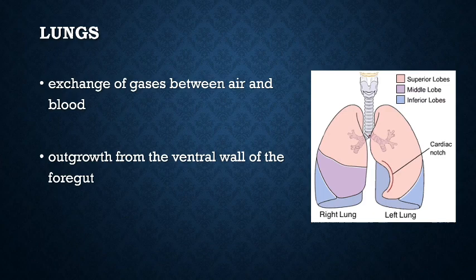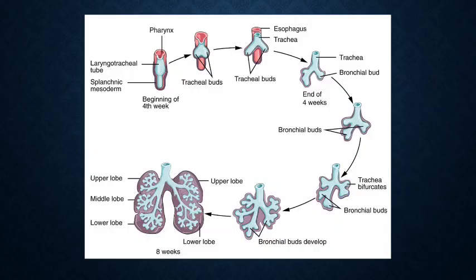The main function of the lung is for air conduction and gas exchange. Developmentally, it is an outgrowth from the ventral wall of the foregut. For the left lung, you have two lobes. For the right lung, you have three lobes. The midline trachea develops from two lateral outpocketings called the lung buds, which eventually divide into branches called the lobar bronchi — three on the right and two on the left, giving rise to three lobes on the right and two lobes on the left.